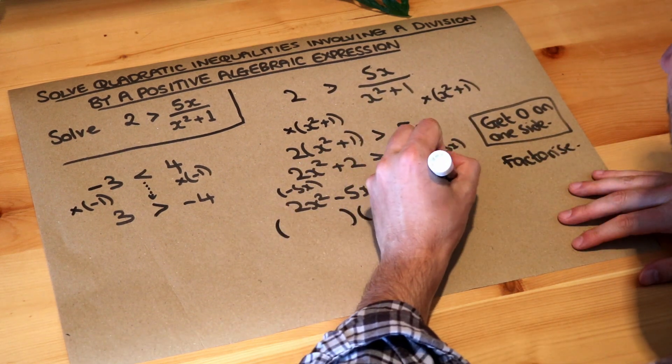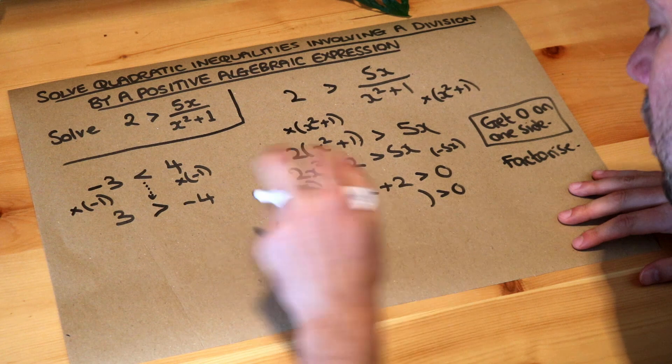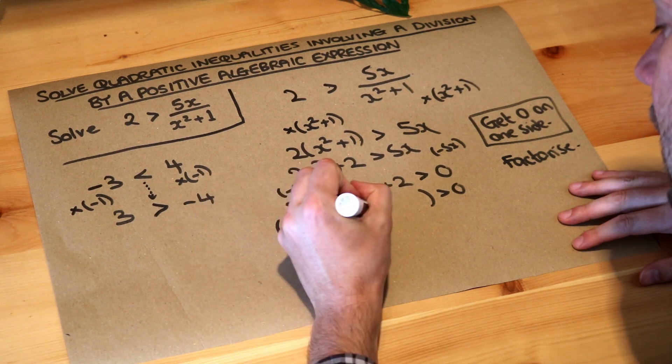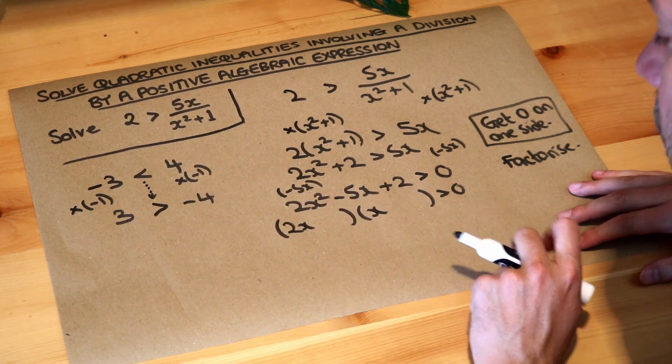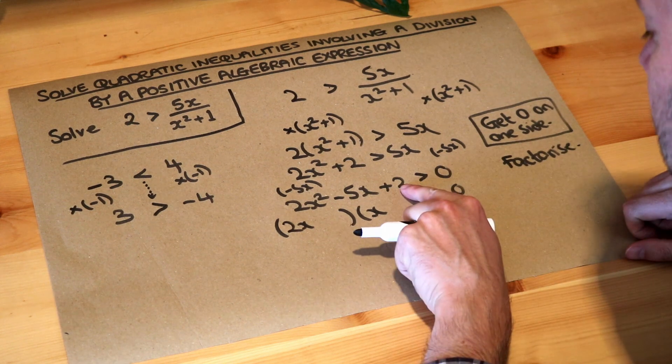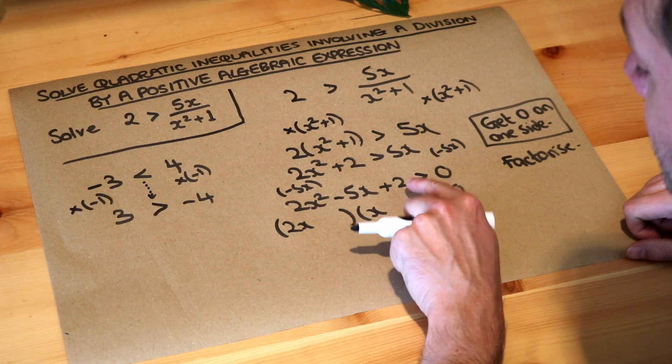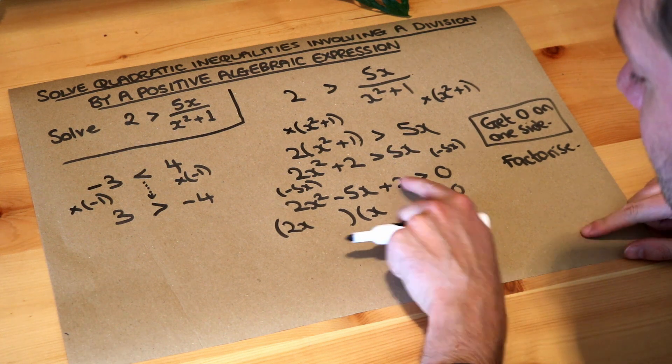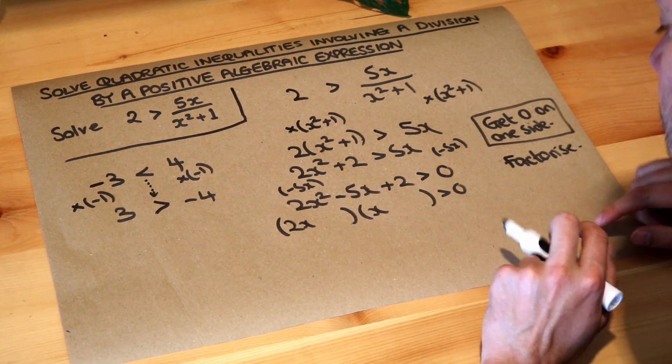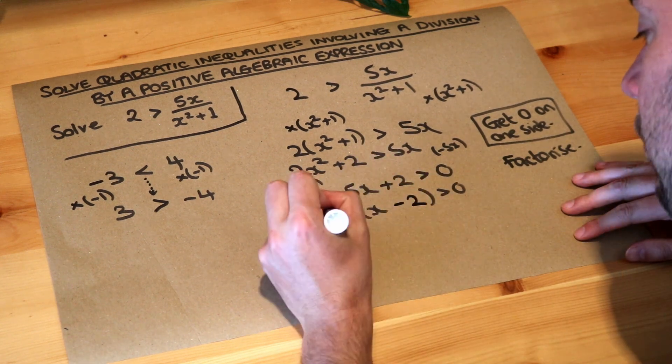So I'm going to just do this one in my head. We know they're probably going to start with 2x and x because they expand to give the 2x squared term, and what two numbers multiply to give two? Well it can only be one and two or it can be negative one and negative two. Well I think it's going to have to be the negative ones, otherwise we're not going to get this minus 5x. So I'm going to guess it's this way around.